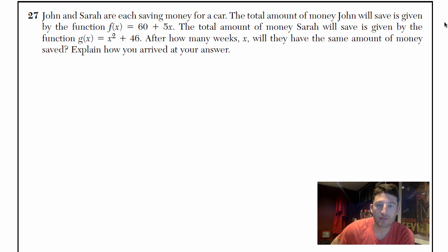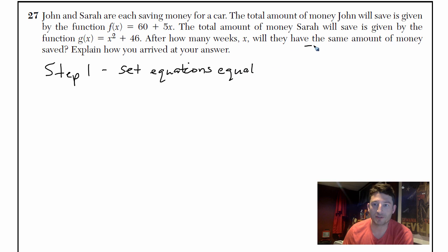Number 27. John and Sarah are each saving money for a car. The total amount of money John will save is given by the function f(x) = 60 + 5x. The total amount of money Sarah will save is given by the function g(x) = x² + 46. After how many weeks x will they have the same amount of money saved? Explain how you arrived at your answer. So what I might do for this one, I might even write step one, set equations equal. Why would you do that? Well, it says we want to know when they will have the same amount of money. So if each one is an equation for how much they make or how much they save, you just got to set them equal.